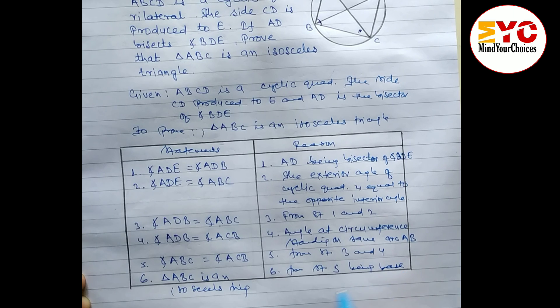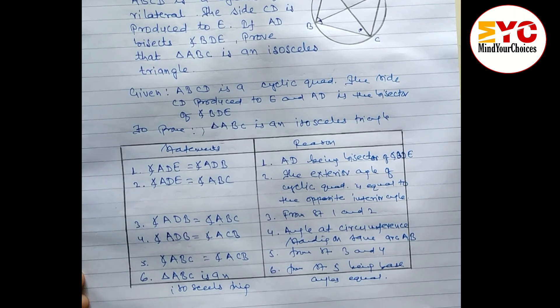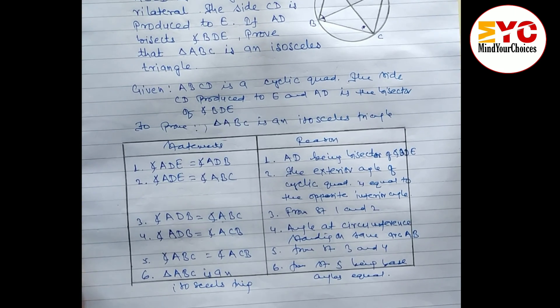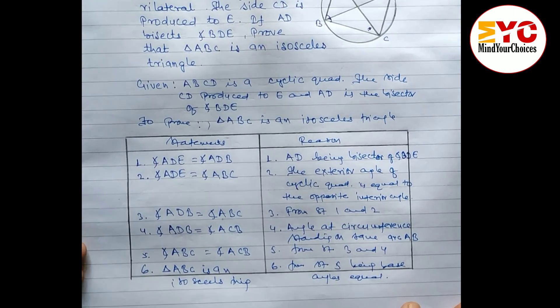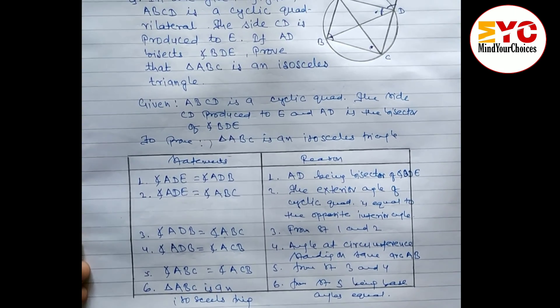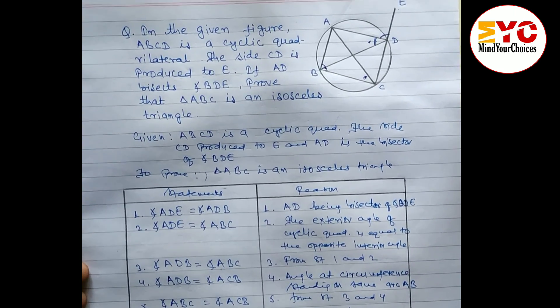Statement 6: therefore, triangle ABC is an isosceles triangle. Reason: base angles are equal — if the base angles of a triangle are equal, then the triangle is isosceles. This completes the proof of this unseen theorem from Class 10.